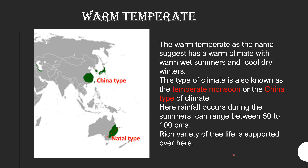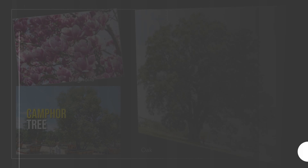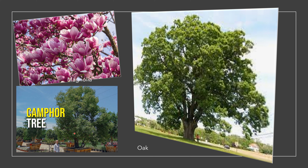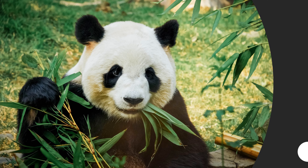A rich variety of tree life is supported here, and the trees found in abundance are magnolia, camphor, oak and bamboo. The warm temperate region is densely populated, and therefore much of its natural vegetation and wildlife has disappeared. The giant panda, which is a rare animal, is found in the bamboo forests of China. Here we can see a panda consuming its favorite food — the tender leaves of the bamboo tree.